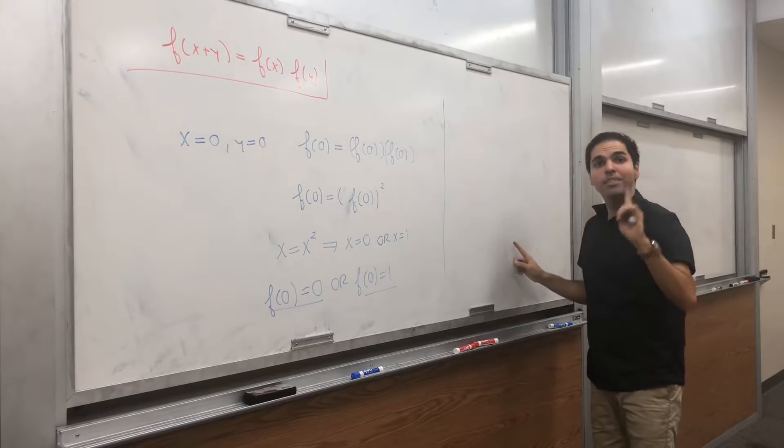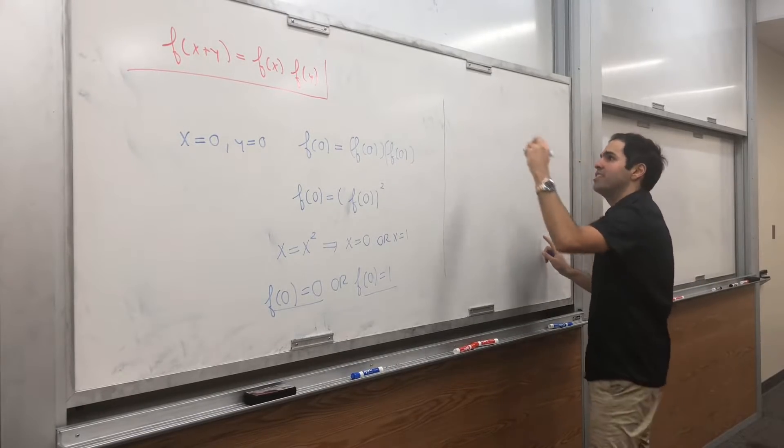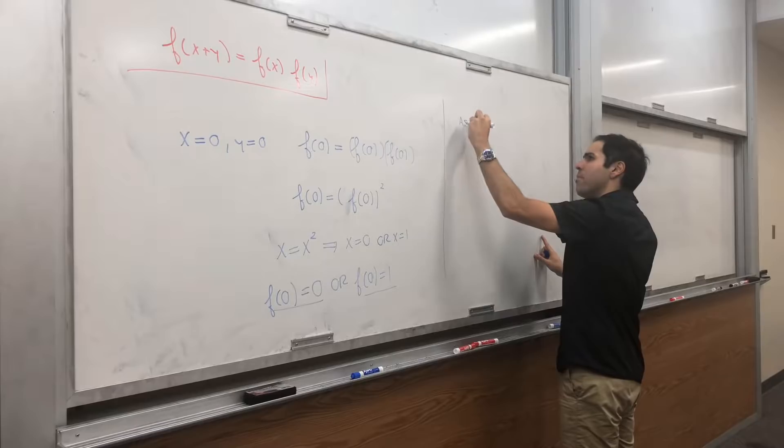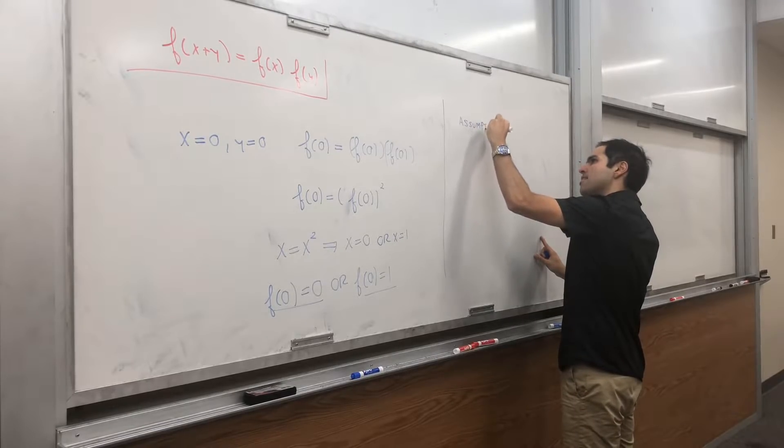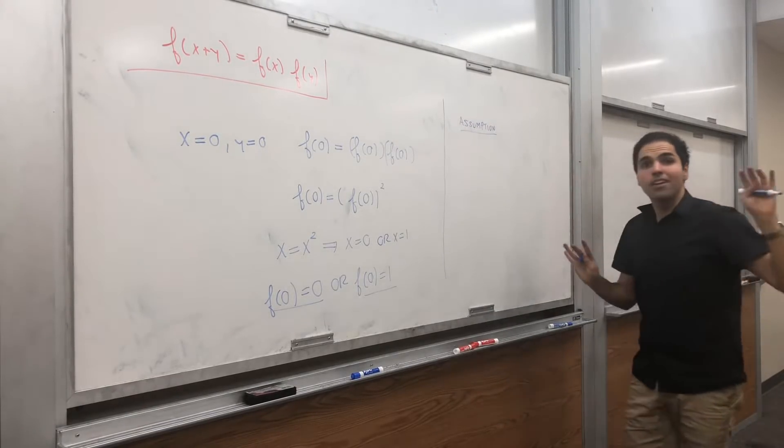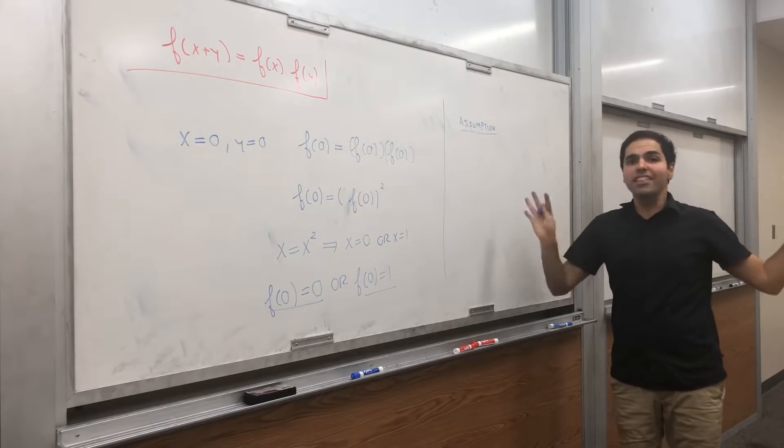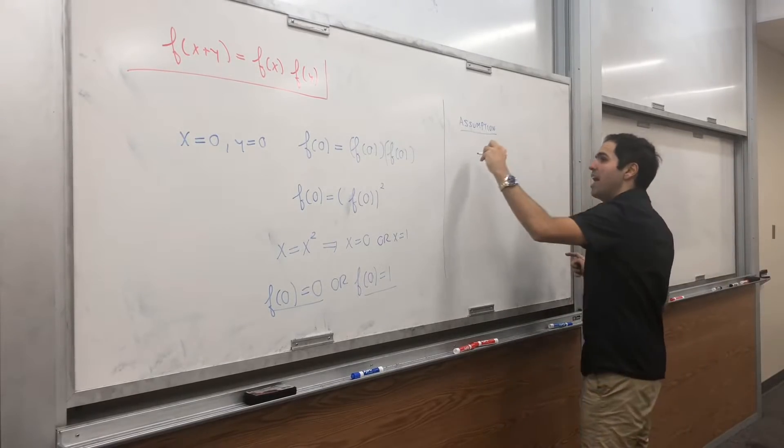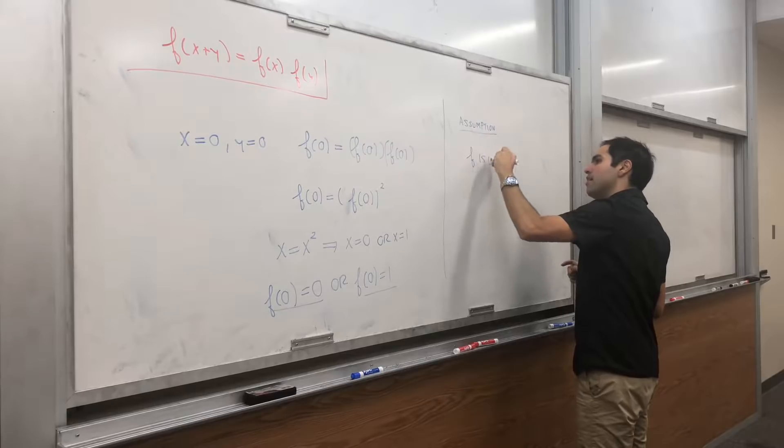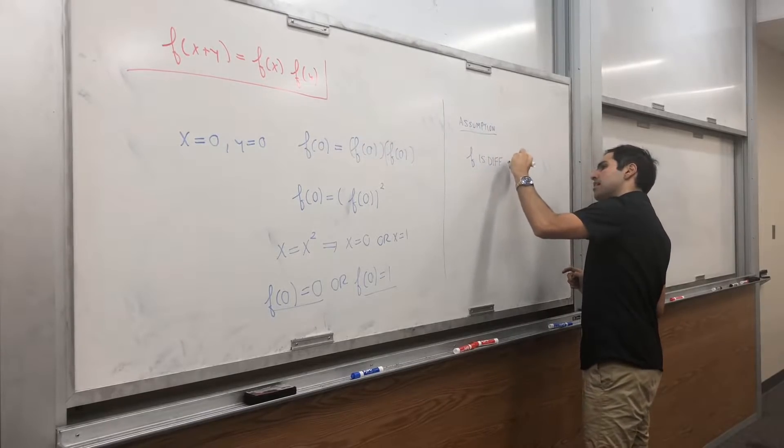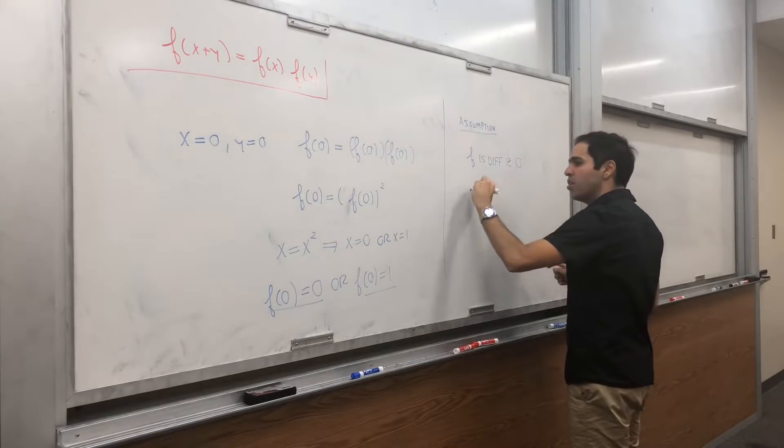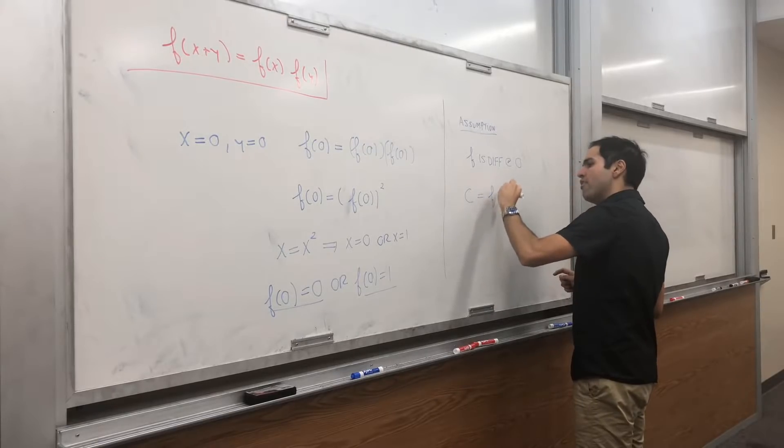Let's just assume that f is differentiable at 0. So assumption and it's very important we don't assume anything at other points. So f is differentiable at 0 and let's call c equals to f prime of 0.